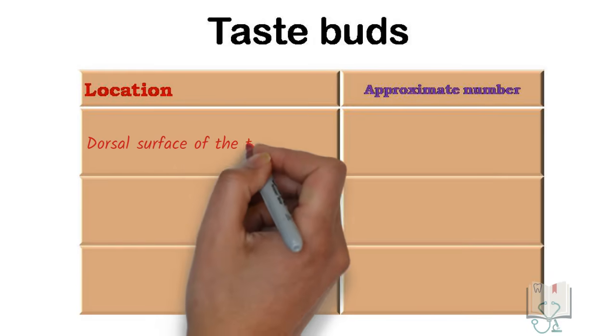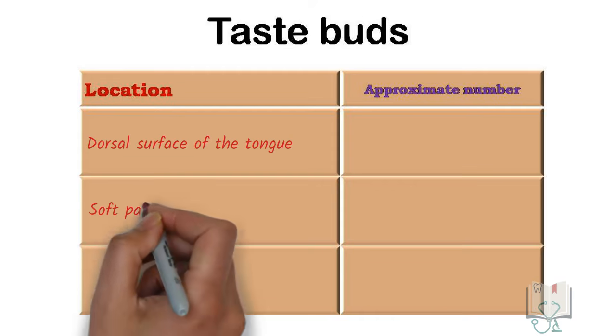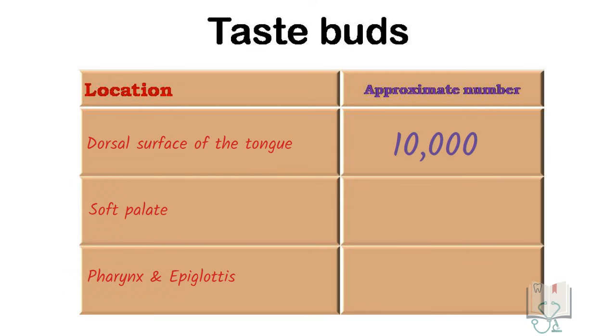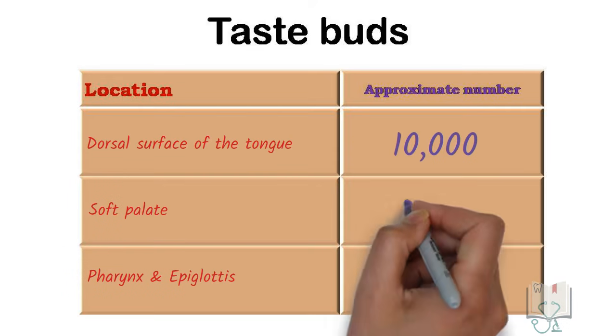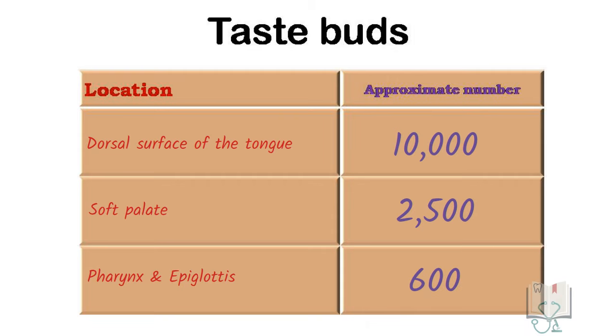Other than the dorsum of the tongue, taste buds are also present in the soft palate and pharynx, though these areas have fewer taste buds in comparison to the tongue.